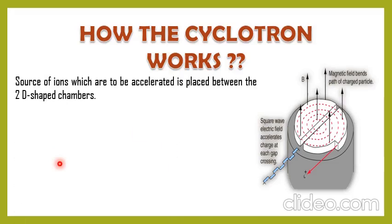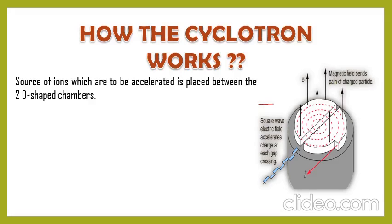Now, how does the cyclotron work? First, we inject the ion source inside the chamber. As we inject the ions, we start the electromagnetic field as well as the RF oscillator. The RF oscillator is a radio frequency oscillator which provides alternating current. One terminal of the RF oscillator is connected with D1 and another terminal is connected with D2. Since it provides alternating current, half the cycle is on D1 and half the cycle is on D2.